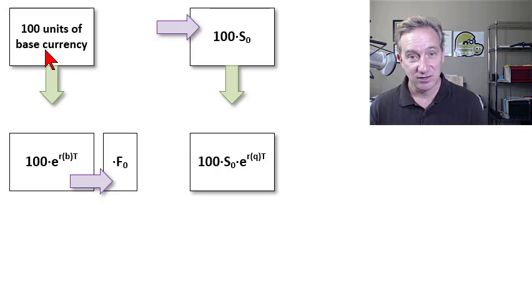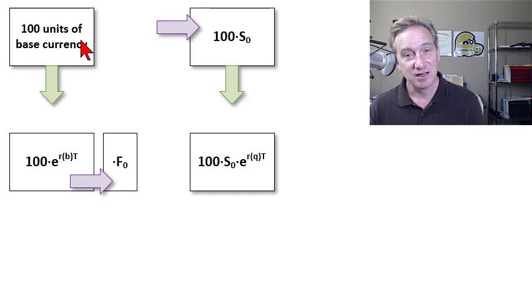I'll assume the base currency is euros. And then interest rate parity says I ought to be indifferent between two choices because I expect at the end of the period to have the same number of quote currency units. My quote currency will be U.S. dollars.